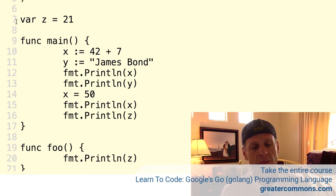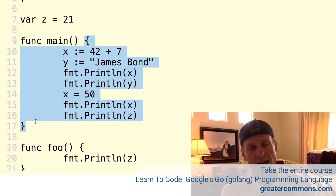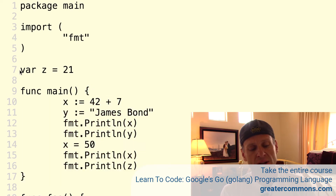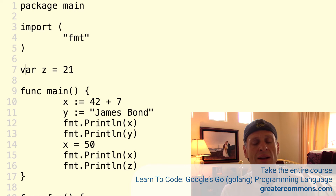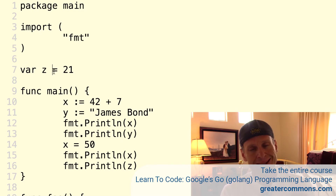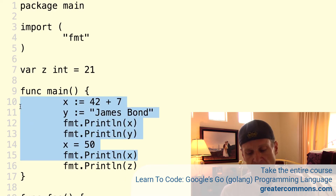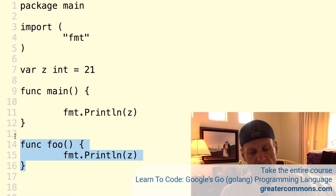The short declaration operator goes a long way toward ease of programming. Outside of a code block, at the package level scope, you can just say `var z = 21` — done. But you could also be more specific and, instead of letting the compiler figure out the type, you could say `var z int = 21`, specifying the type explicitly.